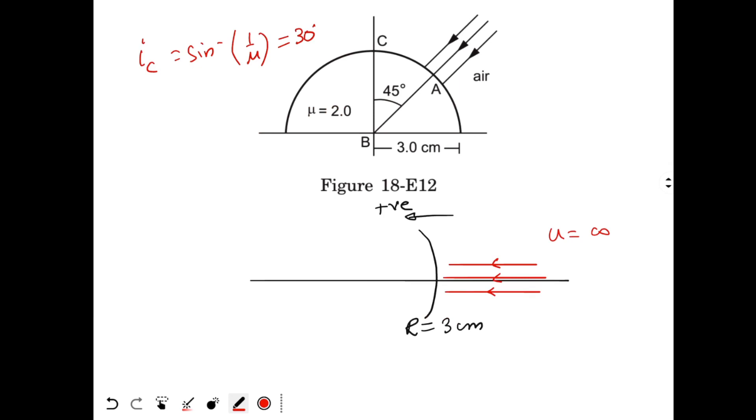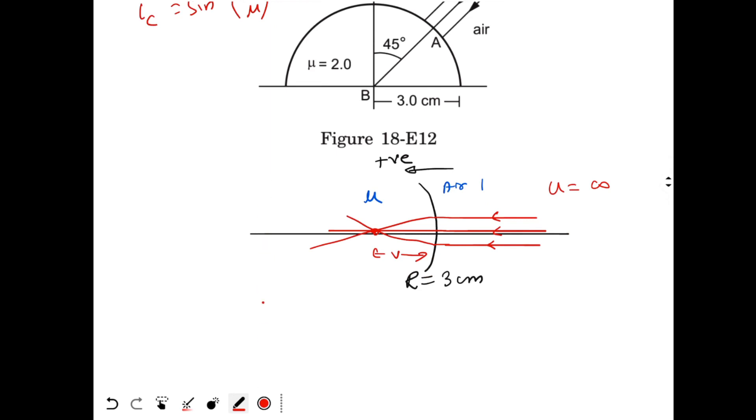Now on the right side we have air, so refractive index is 1. On the left side we have refractive index μ. So the rays, when passing through, this will go straight. This ray when passing through the surface will get refracted and will meet somewhere here. So this is the position of image, distance V. The formula for refraction from spherical surface is μ/V - 1/U = (μ-1)/R.